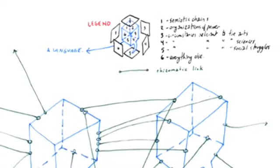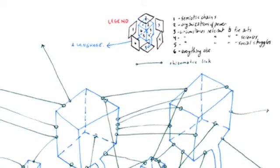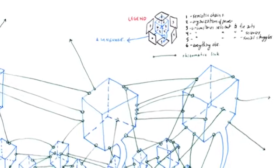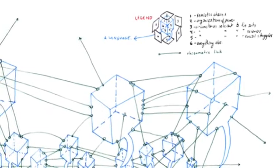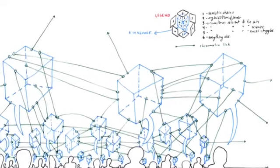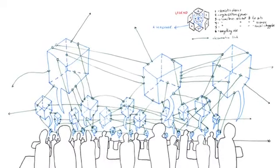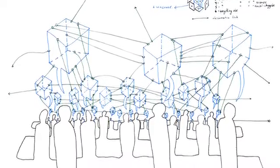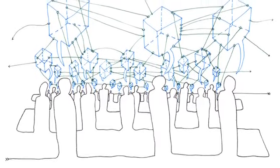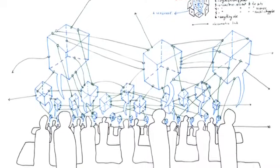Principles of connection and heterogeneity: Any point of a rhizome can be connected to any other, and must be. This is very different from a tree or root, which plots a point, fixes an order. Not every trait in a rhizome is necessarily linked to a linguistic feature. Semiotic chains of every nature are connected to very diverse modes of coding: biological, political, economic, that bring into play not only different regimes of signs, but also states of things of differing status.